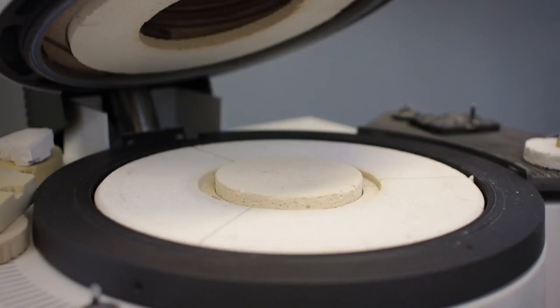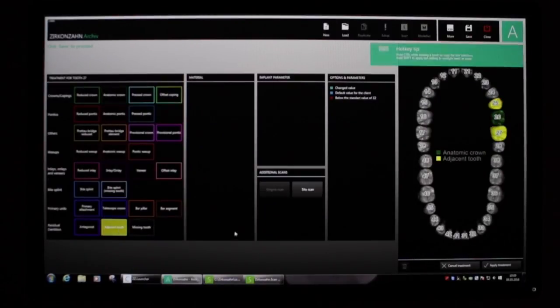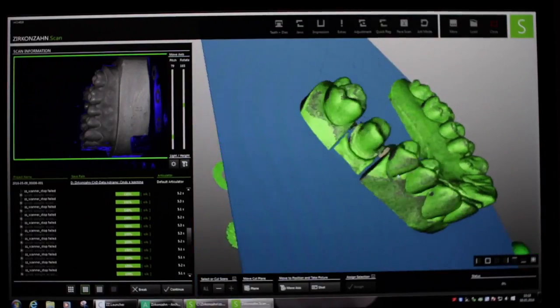This is an overview of the fabrication of a full anatomic zirconia crown. The model is scanned into the CAD-CAM software. The crown is designed on the software and milled.